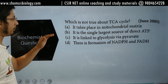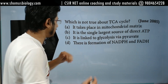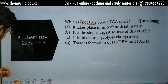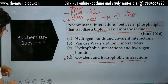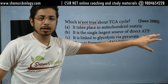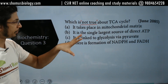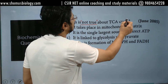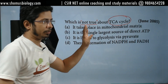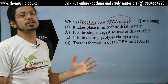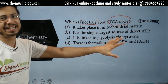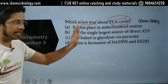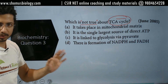Now let us move to the third kind of question — 'which is not true about the TCA cycle.' Again, this is a true-or-not-true type but not a combination-based question. The options are lengthier and you need to read them carefully. It is a straightforward question but with longer options. When you read this, you know you need to know the properties of the TCA cycle to answer, because any property can be asked. If you do not know the basics and properties of the TCA cycle, you need to leave this question.